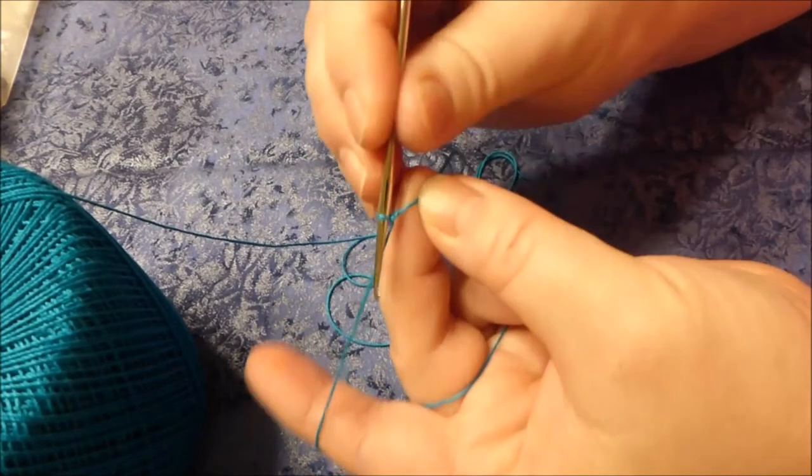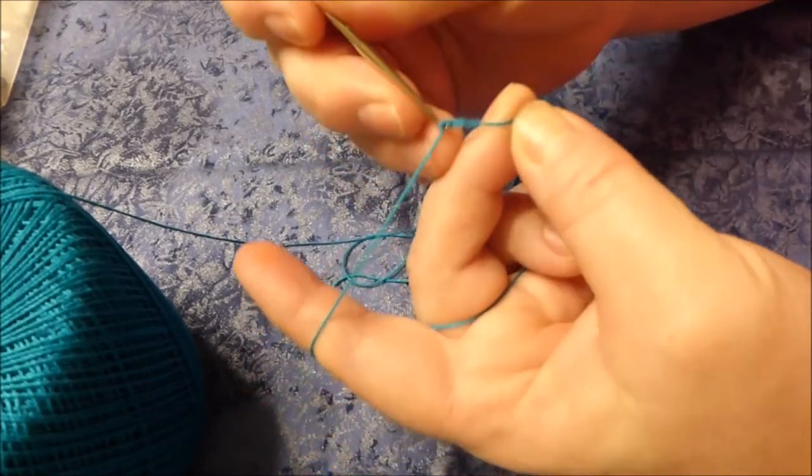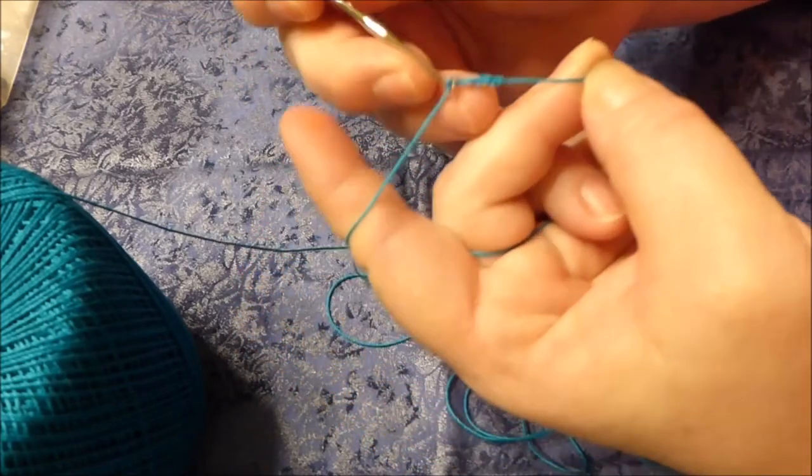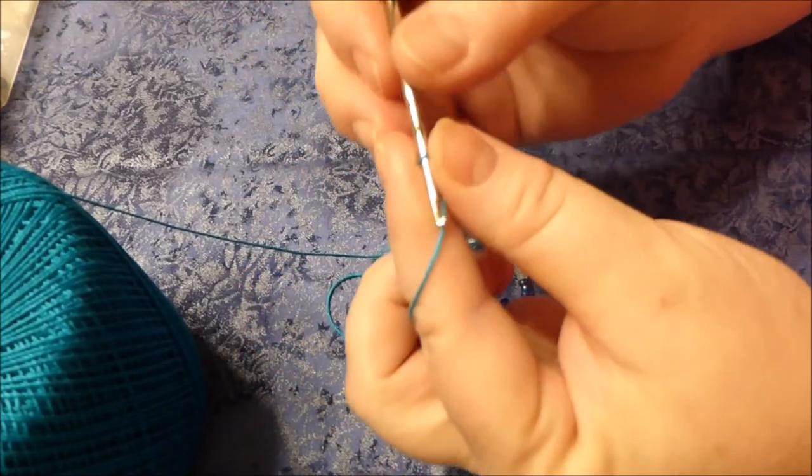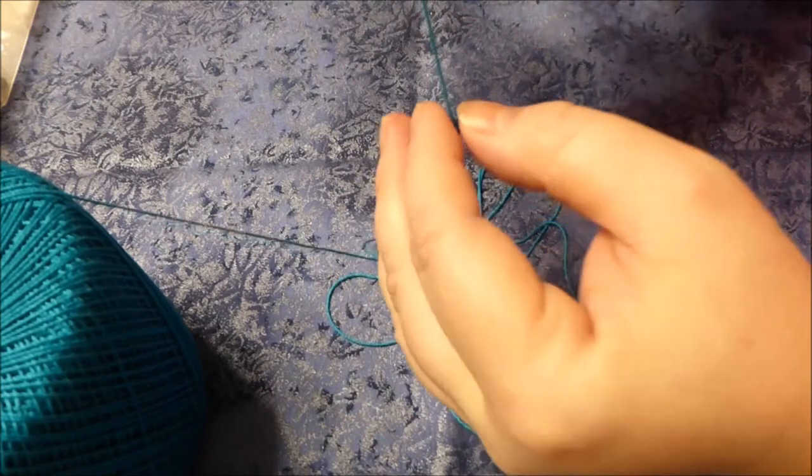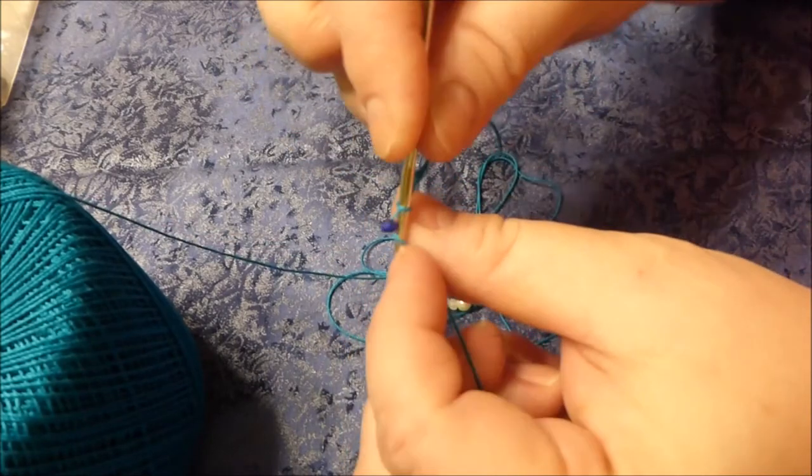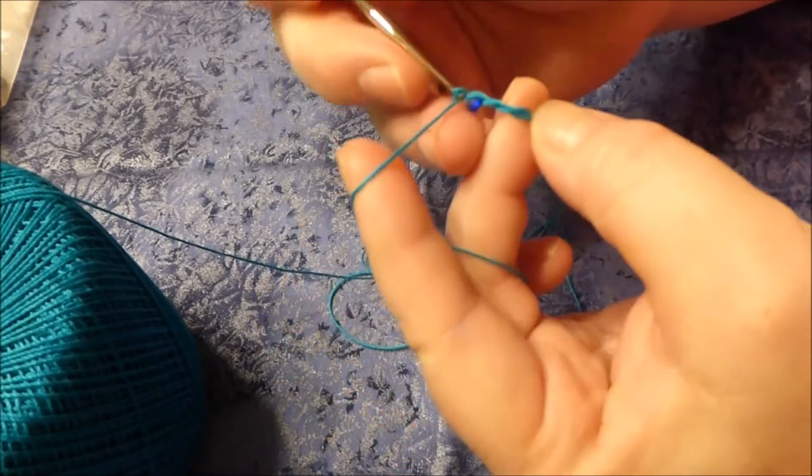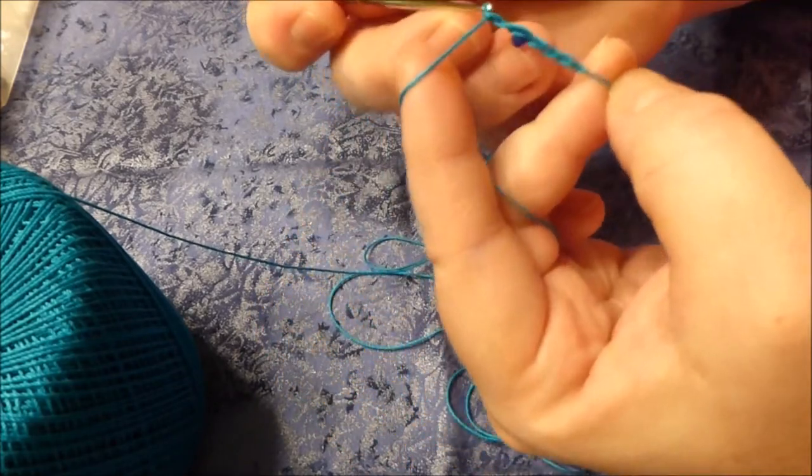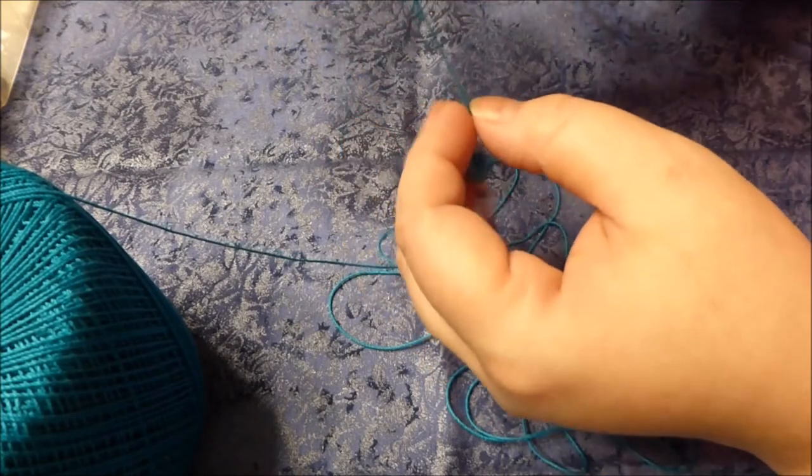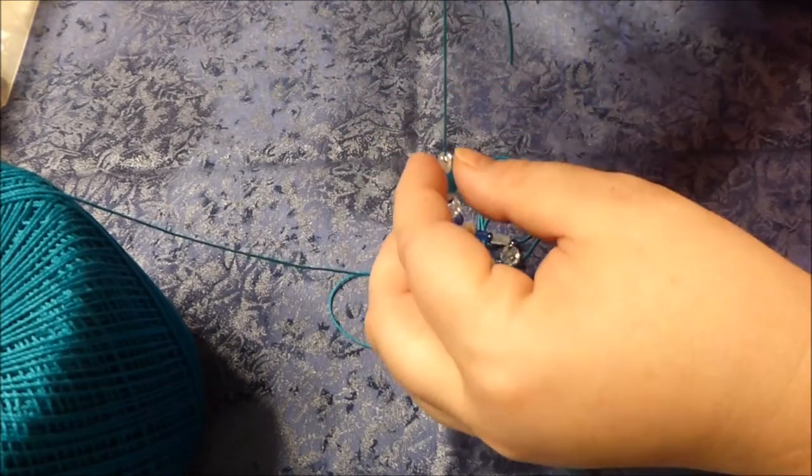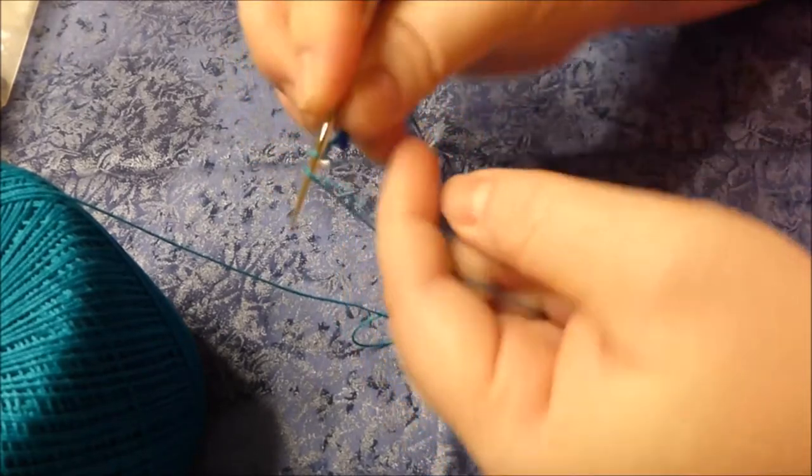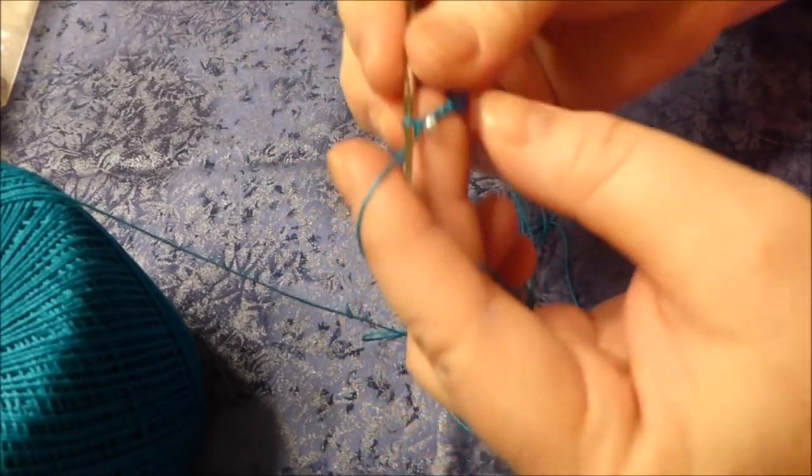Then I'm going to begin my chain stitch. When I have made a couple of chains, I'm going to slide a bead up and chain over it. I'm going to make a few more chain stitches. How many in between the beads is up to you. Slide another bead up, hold it in place, and chain over it.